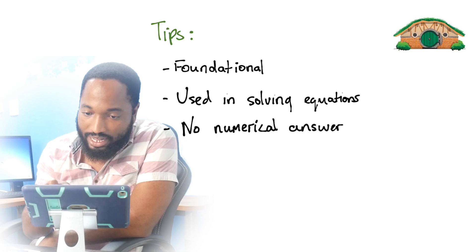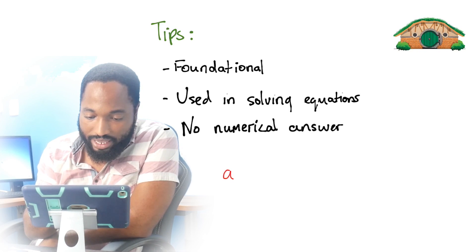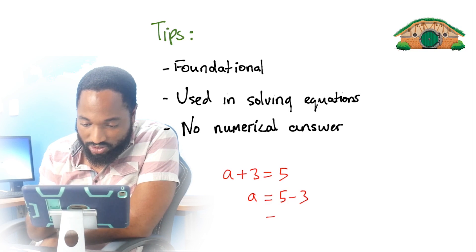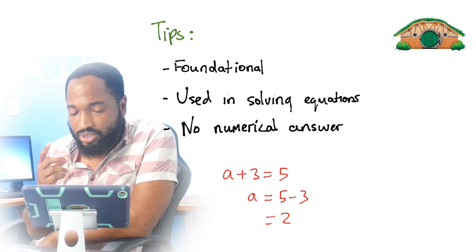No numerical answer when you're just finding the subject of the formula. Let me show you what I mean by that. So if I have something like A plus 3 equals 5, obviously A is 2. You'll solve this by bringing across the 3. Everybody knows how to do that. You get a 2 there, right? That's transposing there.